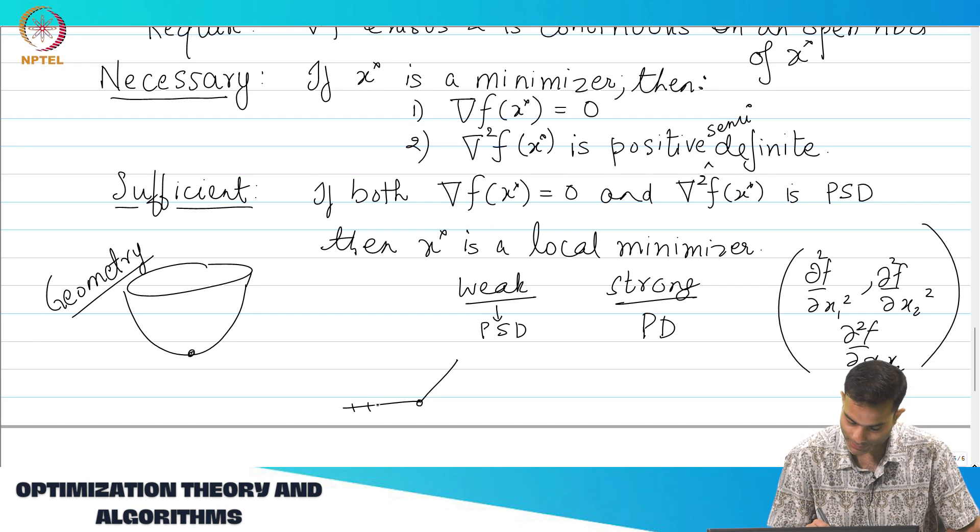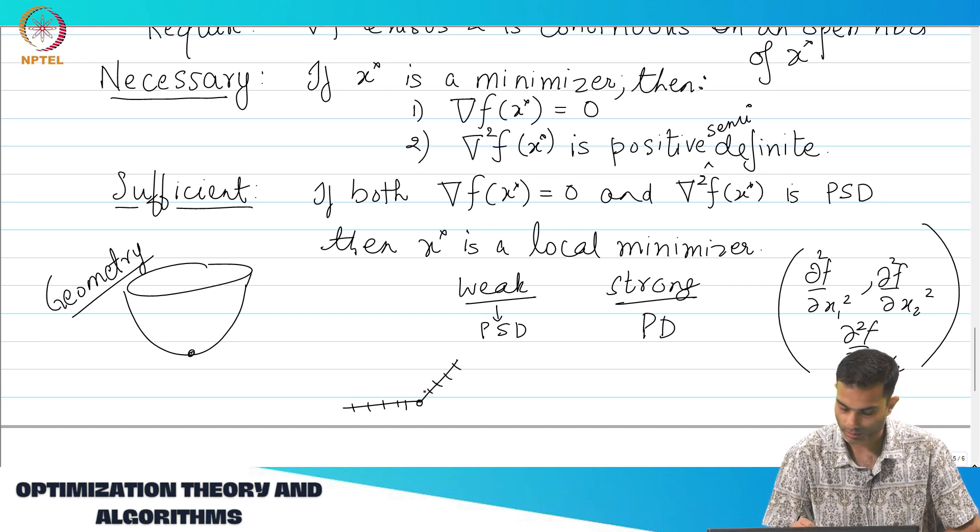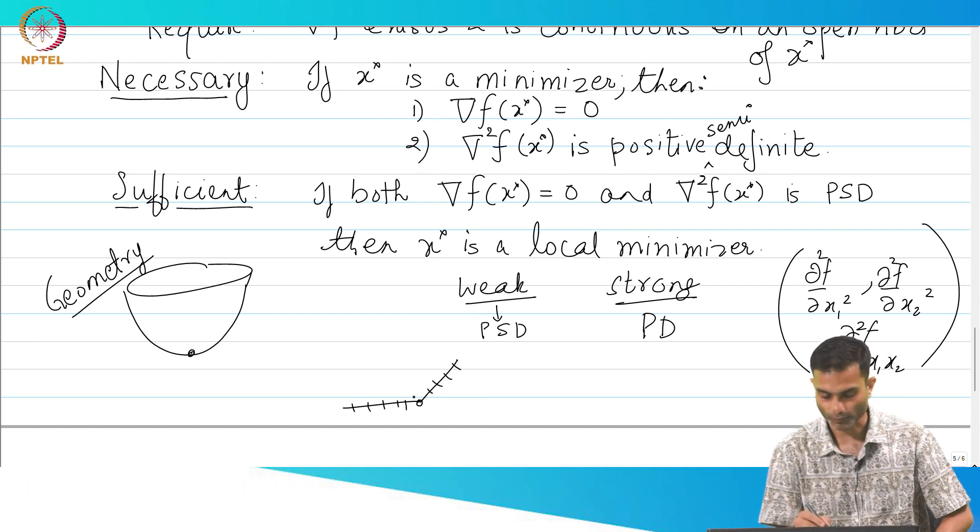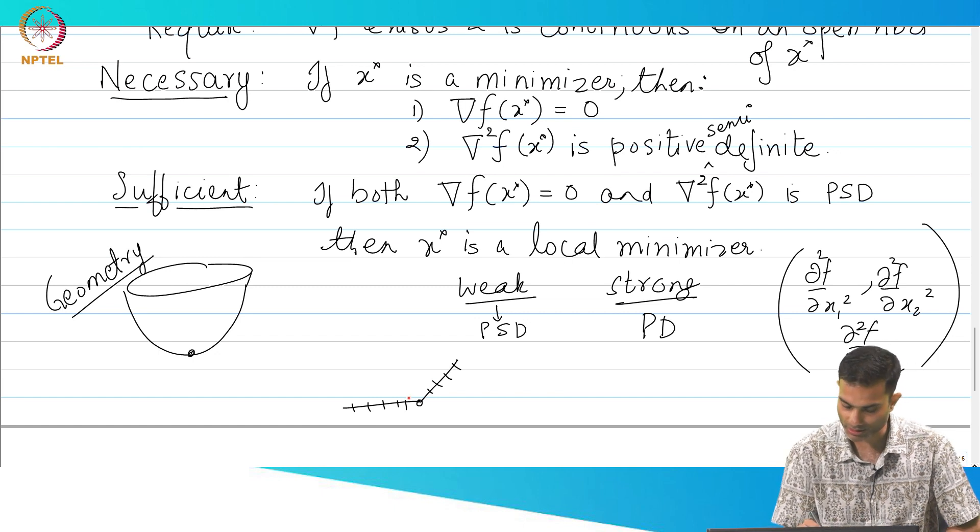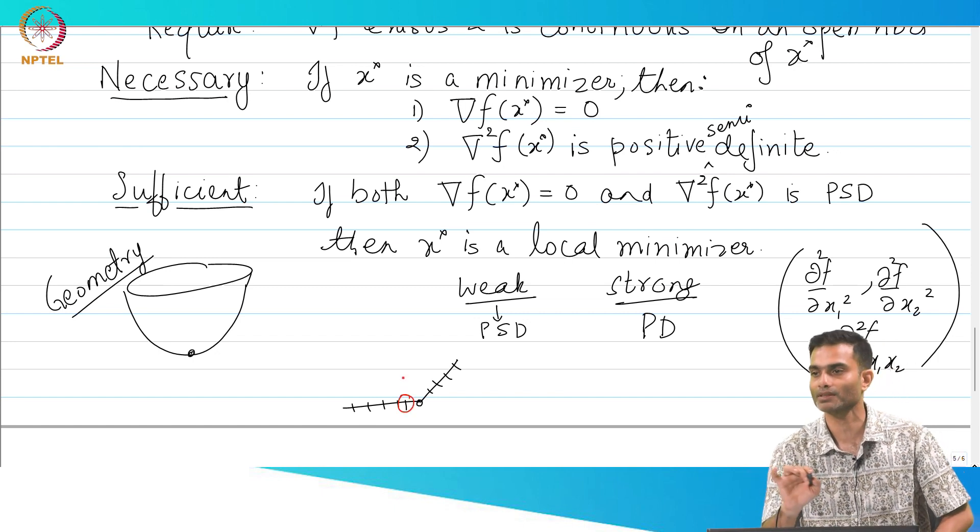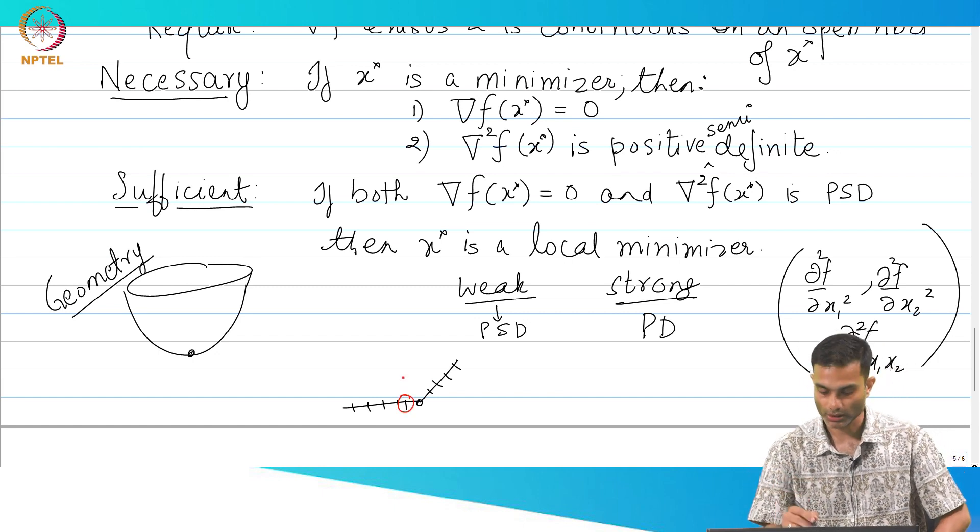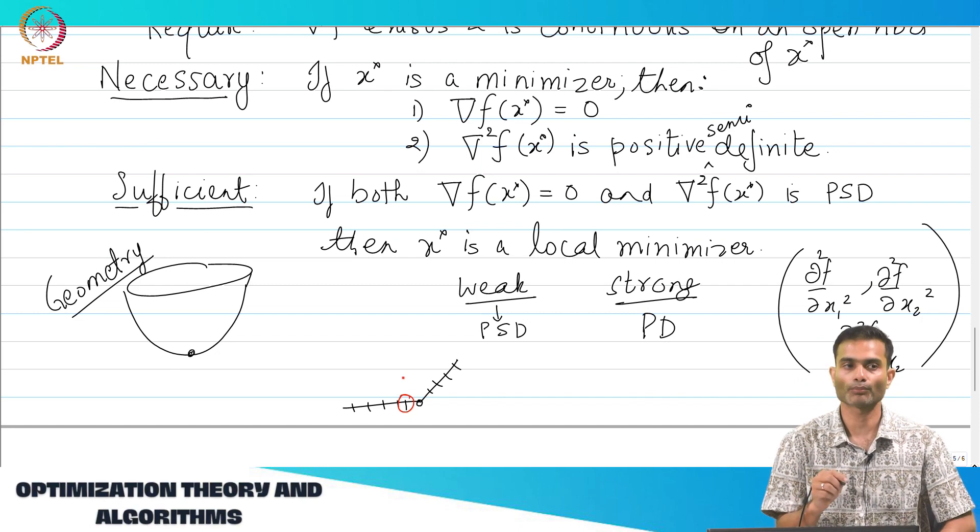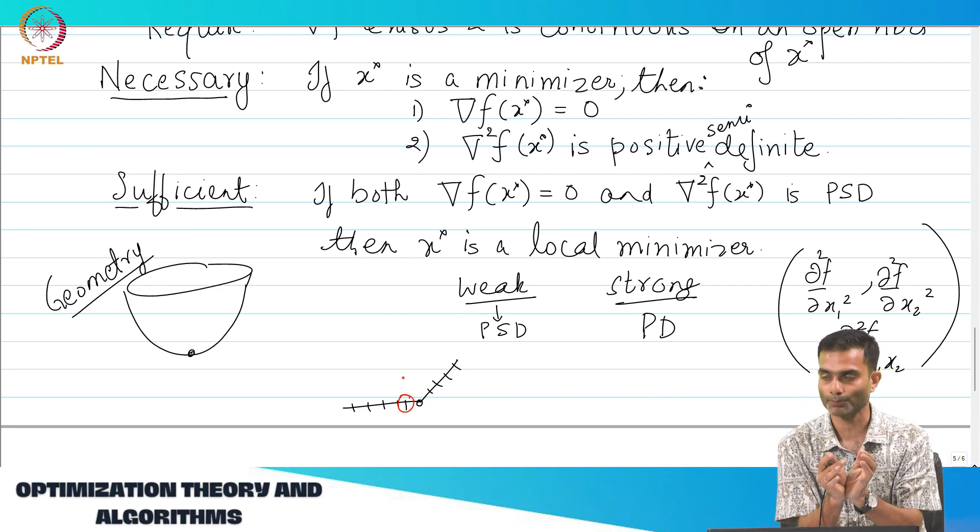Well, the derivative here exists at all of these points, but not at this point, but what this theorem is saying is that in the small neighborhood of this point you check whether it is continuous. That is what I need to check. So, what is the motivation to have a neighborhood around that point?